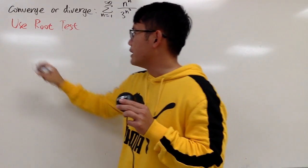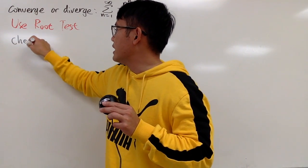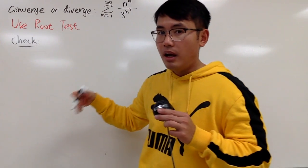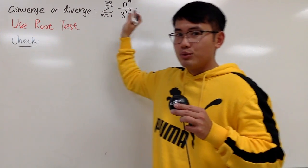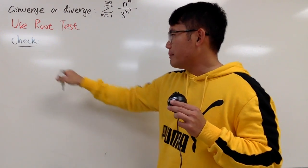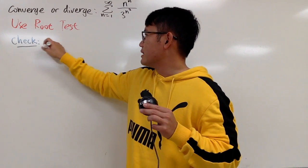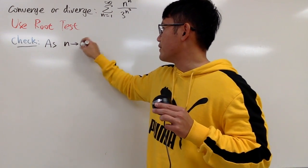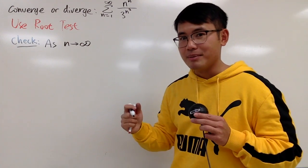And remember for the root test, what we do is, you are going to check the limit as n goes to infinity, and you take the nth root of this expression. And I'm not going to write down LIM. You can just write it as n goes to infinity. That's another way to write down taking a limit as well.